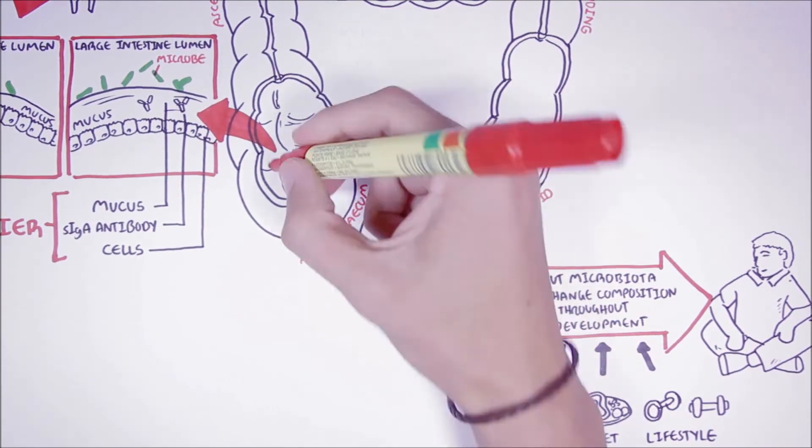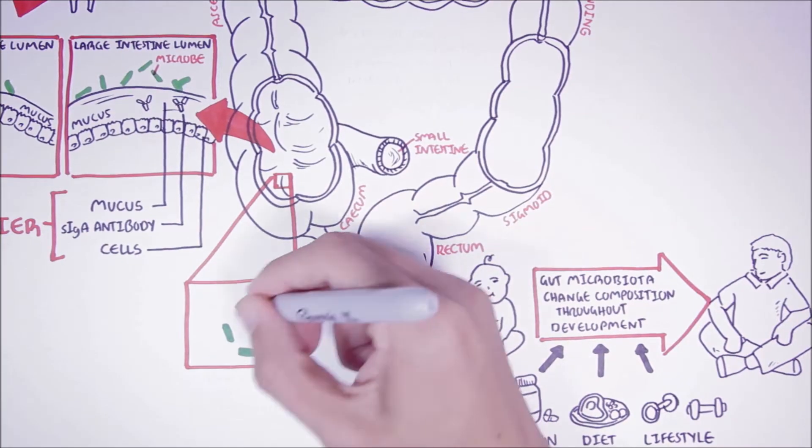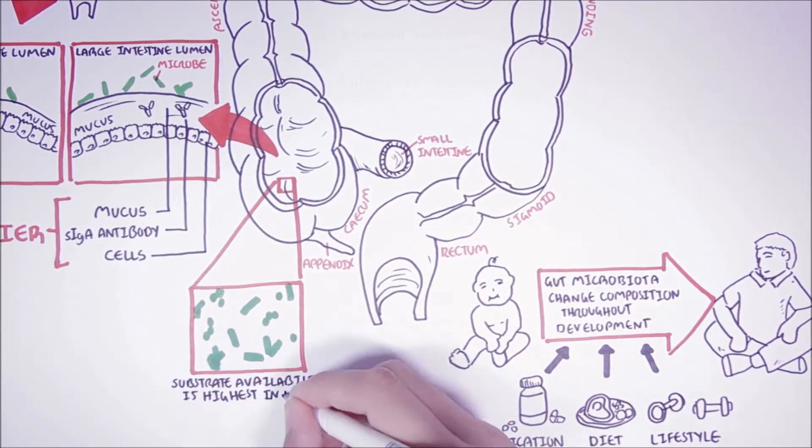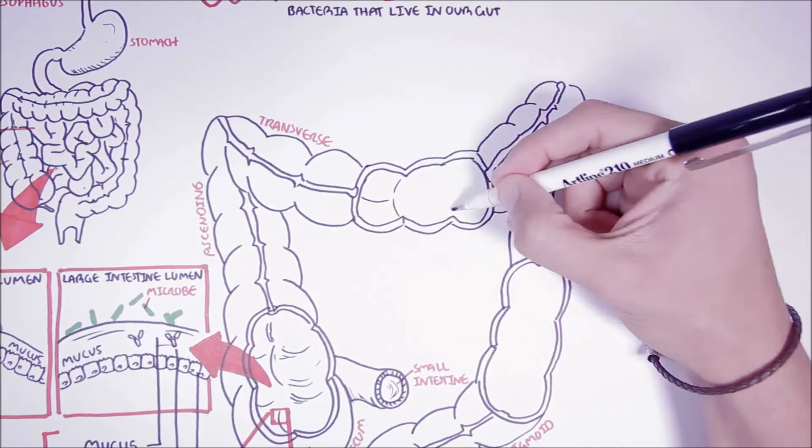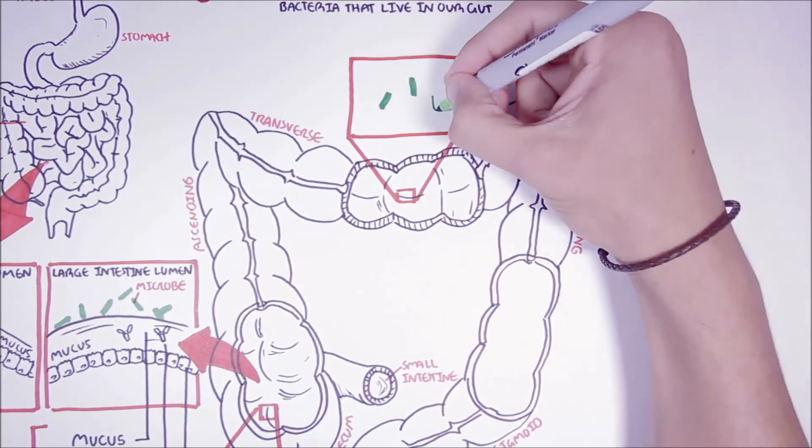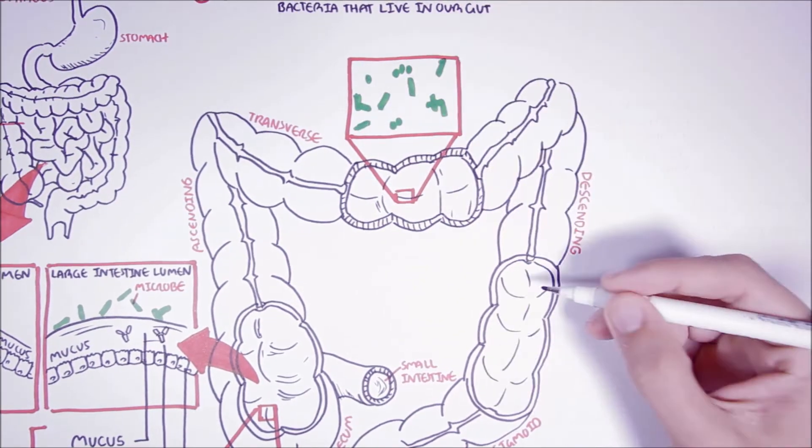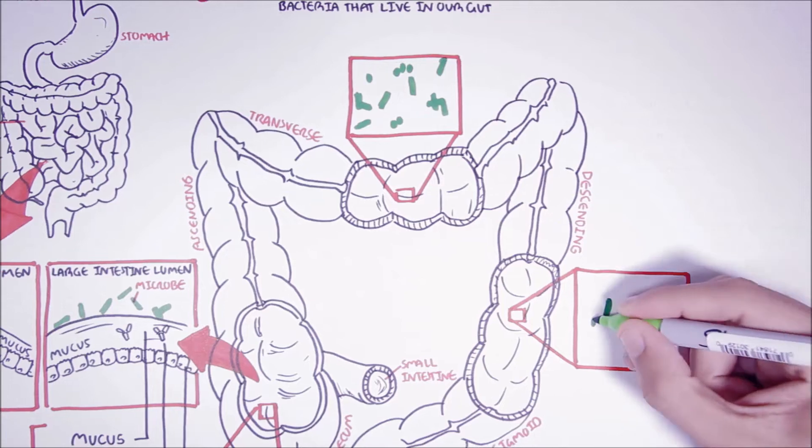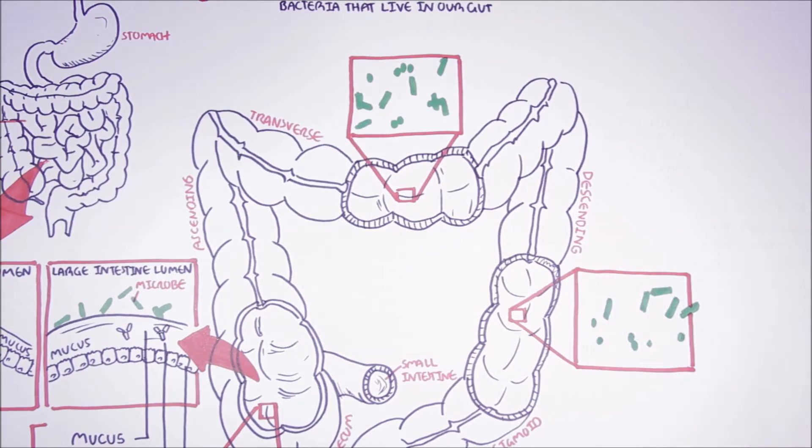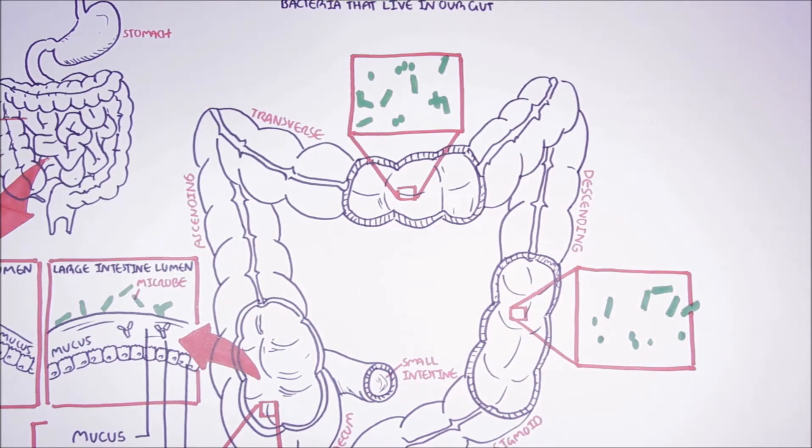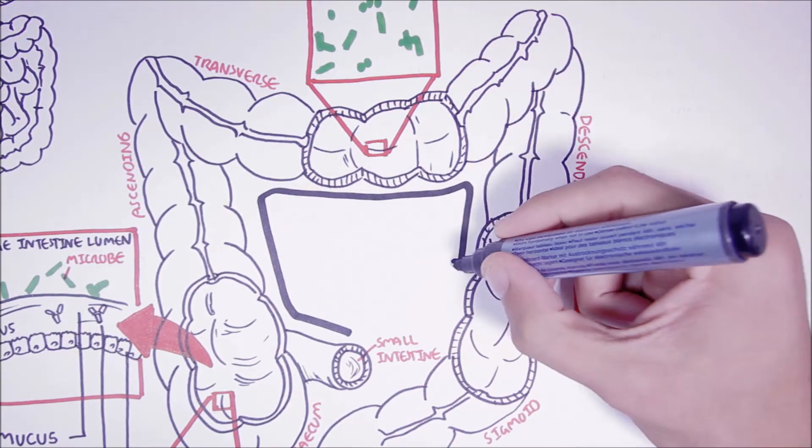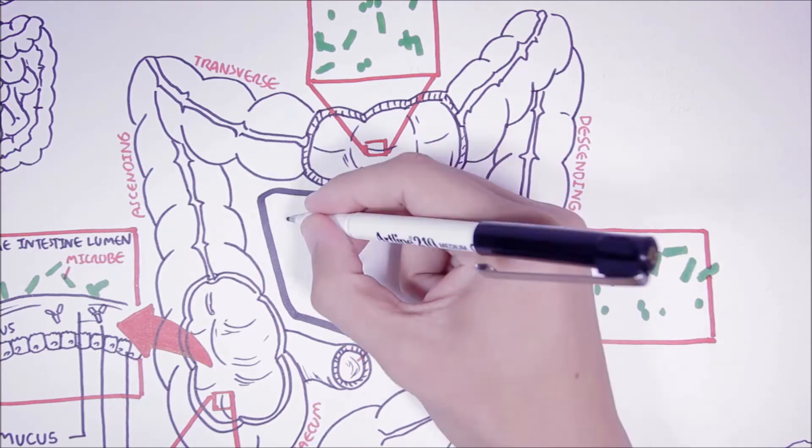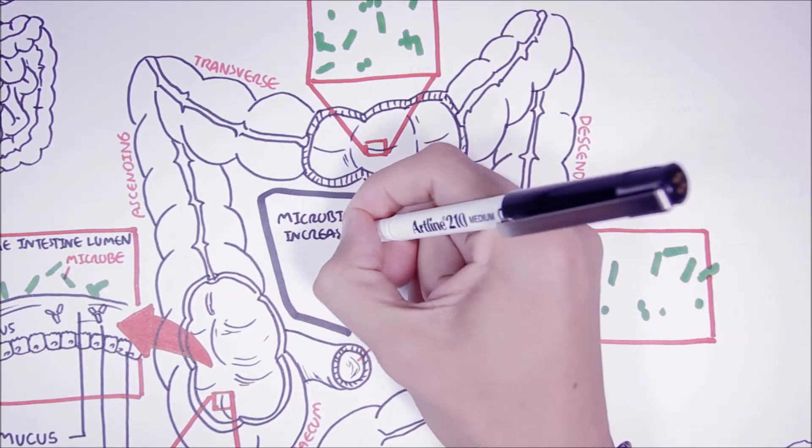In the large intestine, the bacteria are mainly found in the proximal colon, because this is where substrate availability is highest. But there are still so many bacteria everywhere else, such as the transverse colon, as well as the descending colon. And so we can say that the bacterial density will increase from the duodenum of the small intestine to the large intestine. We find especially a lot of bacteria in the proximal colon.